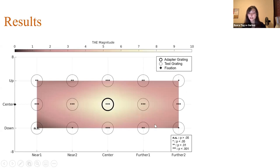Here, our results are shown as a heat map. X-axis shows the name of the test location and Y-axis shows the row of the test location. The circles show the locations of the test gratings, and the stars in them show the significance of the tilt after effect magnitude. As you see, we observe significant tilt after effect magnitude at all test locations except one location. And we also see that the tilt after effect magnitude was highest at the adaptor location and it decreased as we go farther away from the adaptor.